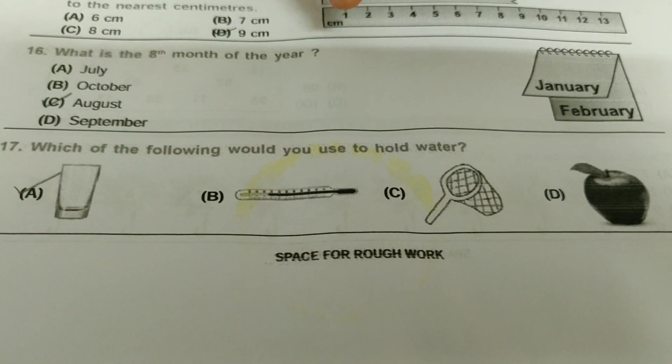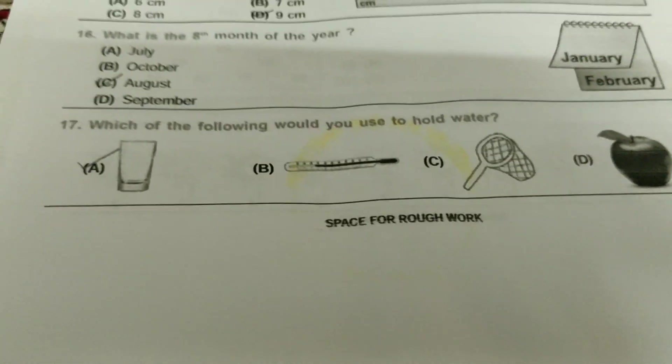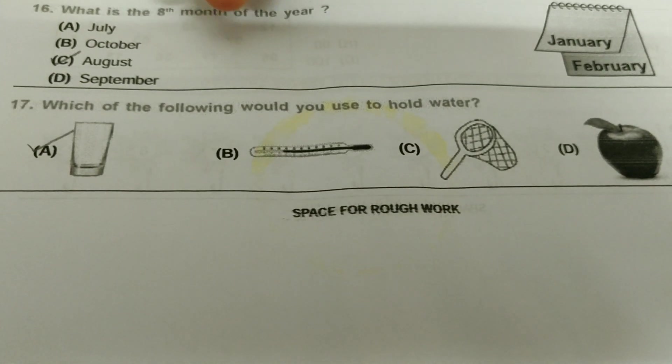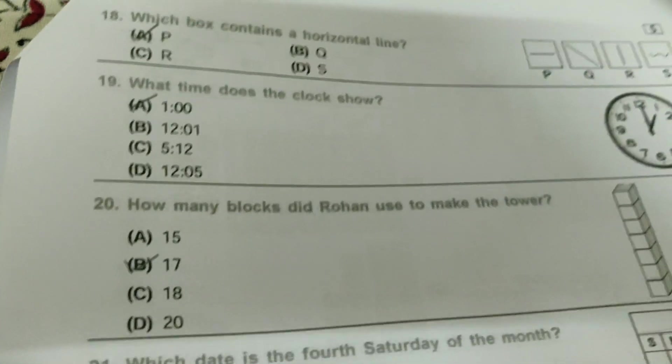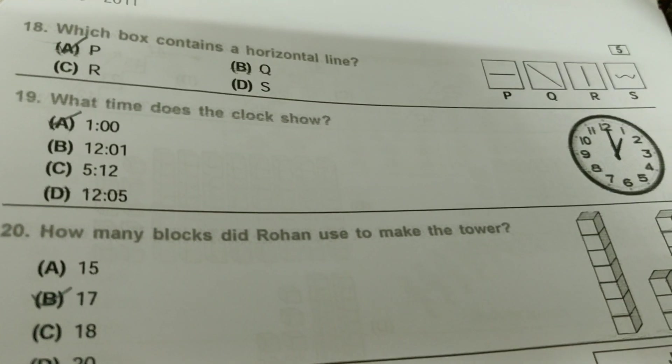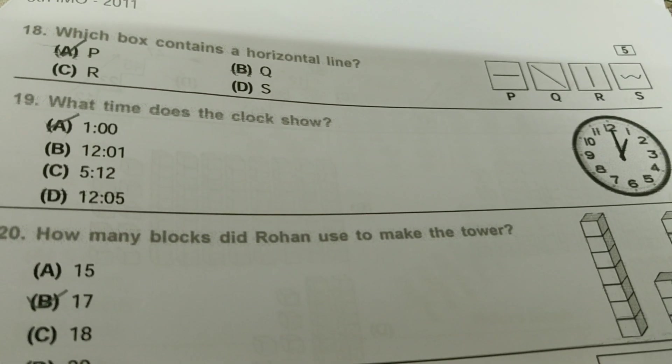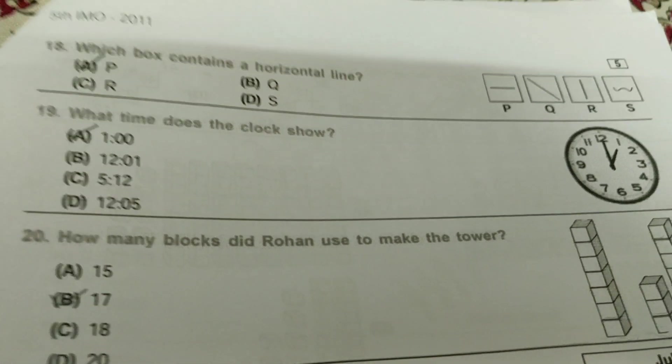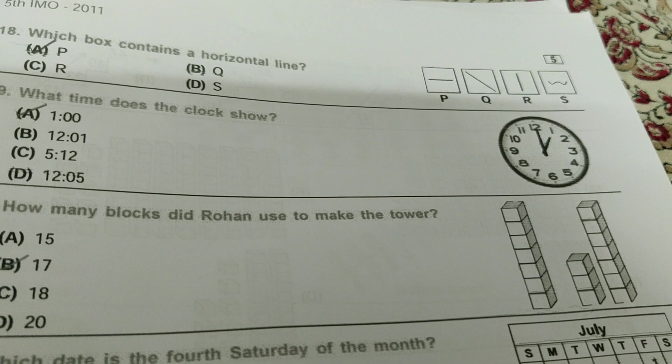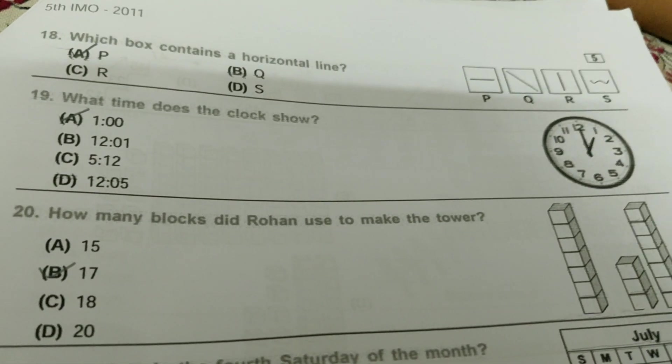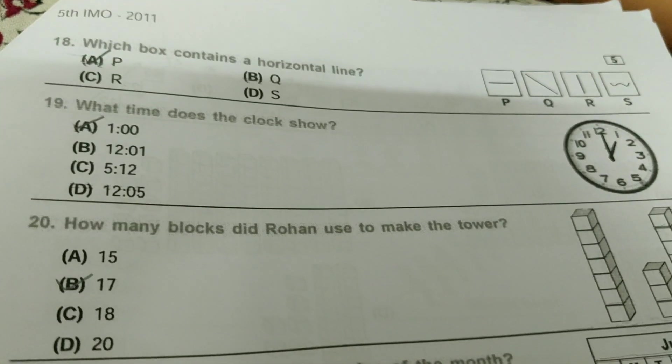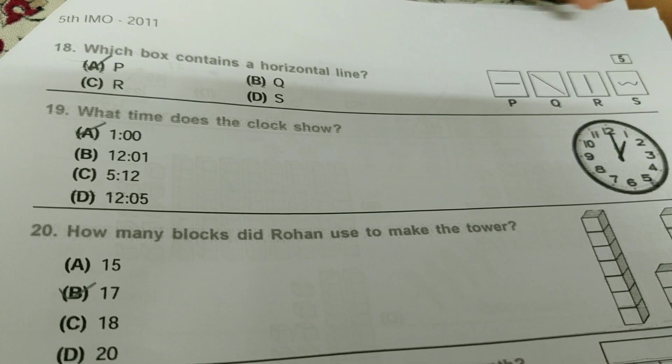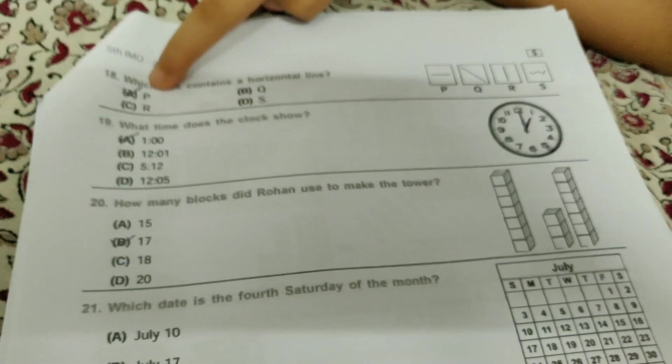Which of the following would you use to hold water? Obviously not any thermometer or a net or an apple. Well, obviously we can use a glass. Which box contains a horizontal line? And you may also be taught that horizontal means sleeping line and vertical means standing line. And oblique line means covered. So I told this, horizontal means sleeping line. So can you guess which is sleeping line? Put it in the comments below. It's P, A bit.